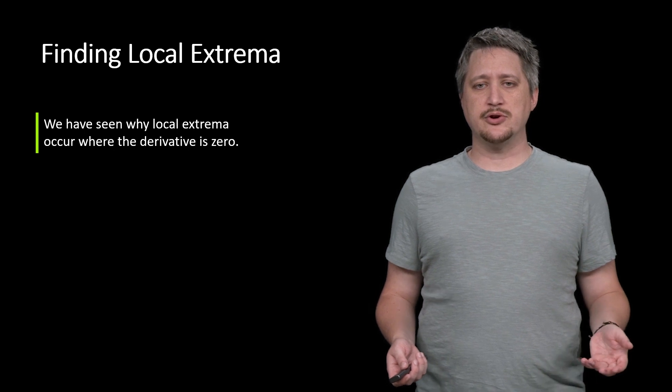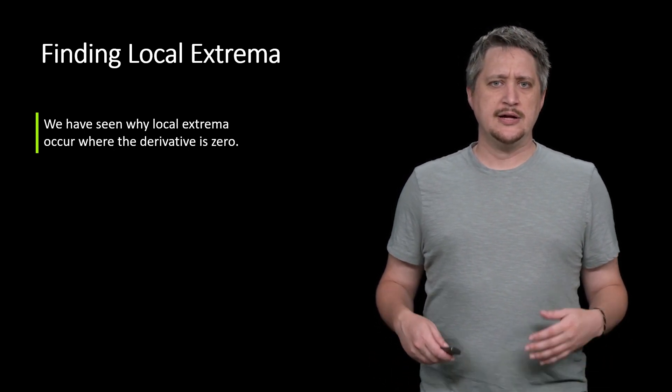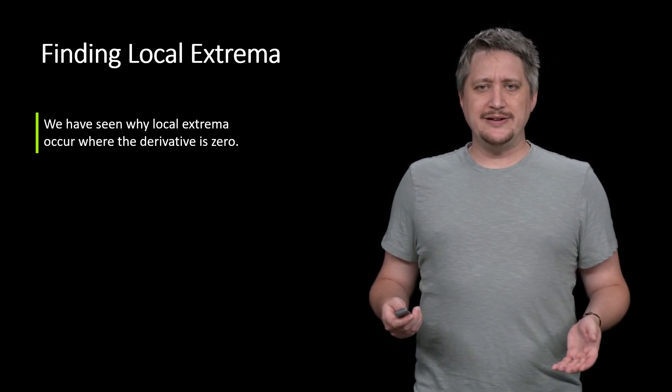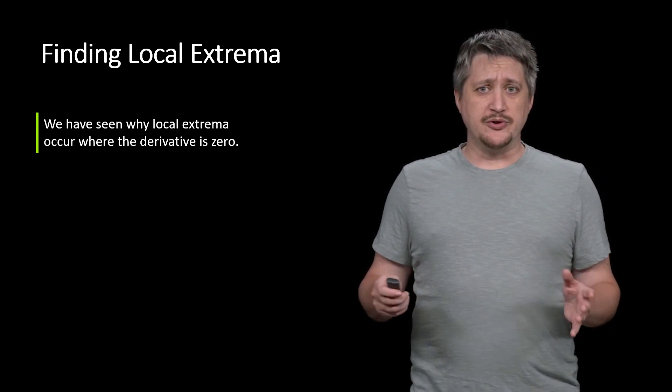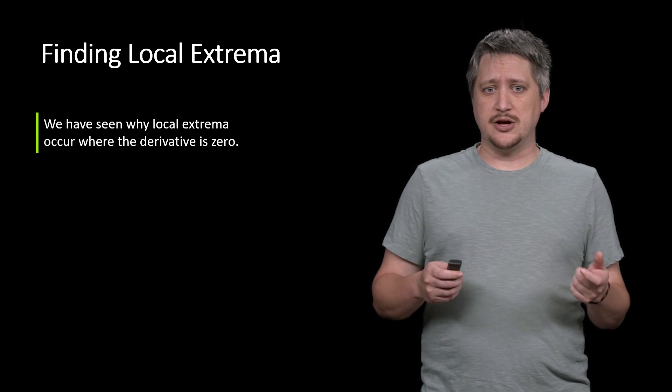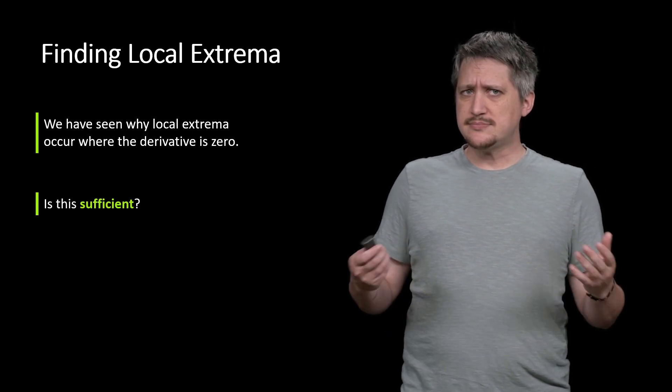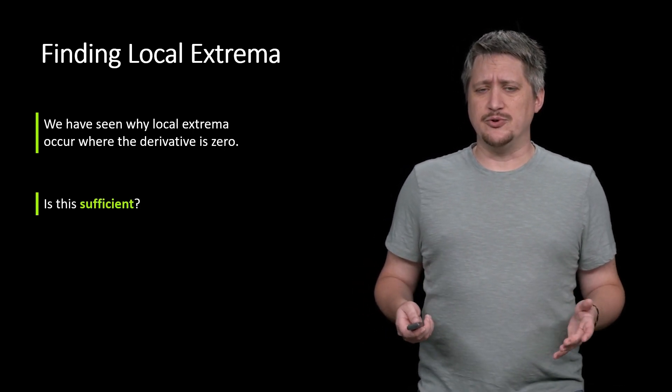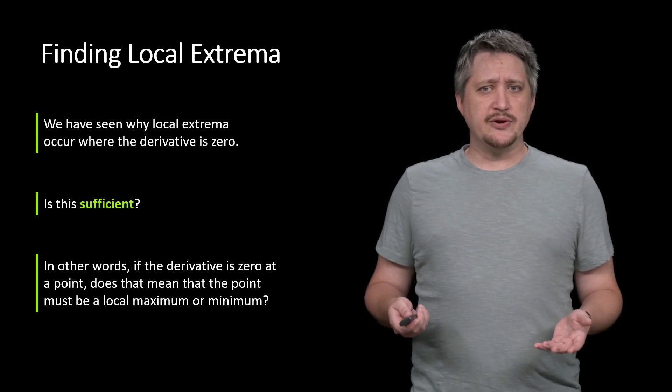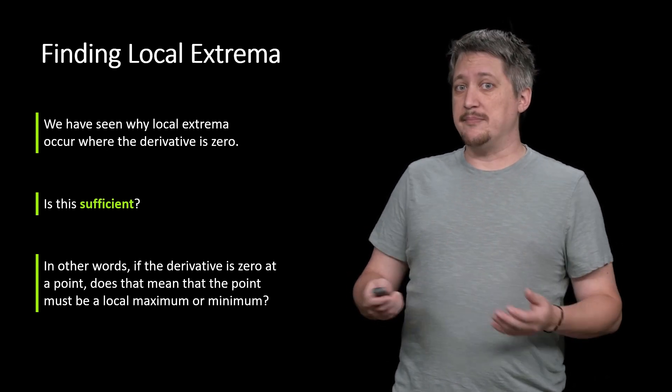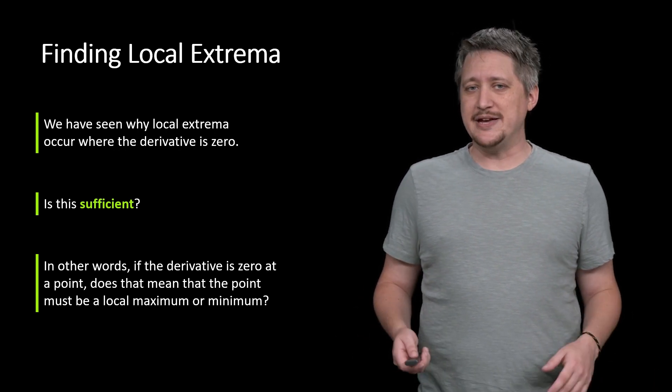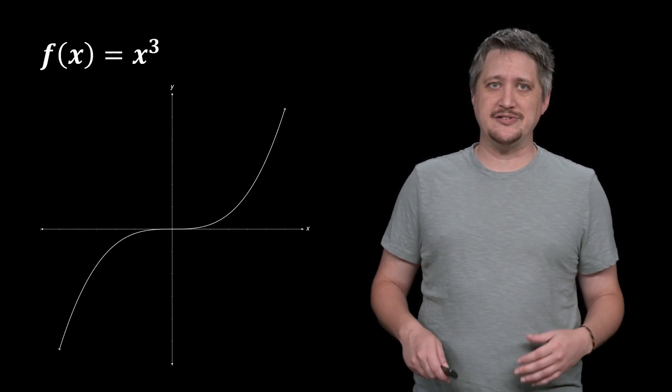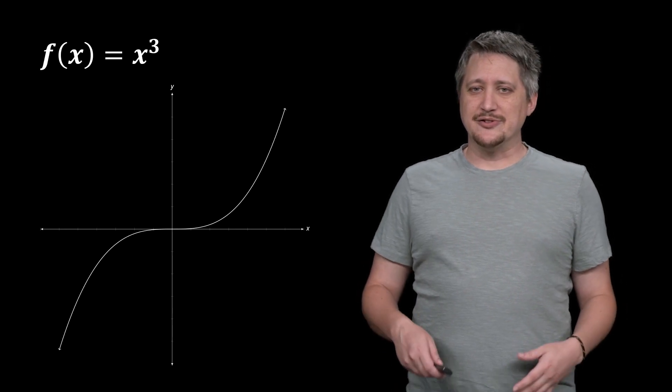Okay, so we've seen why local extrema occur where the derivative is zero. But always a good idea to ask - this is a thing that we've noticed, that local extrema mean that the derivative is zero there. But is that sufficient? So in other words, if the derivative is zero, does that automatically tell me I have some sort of local extrema? And as you may guess, because math is like this, not necessarily.